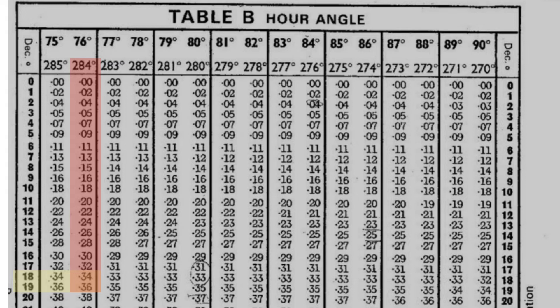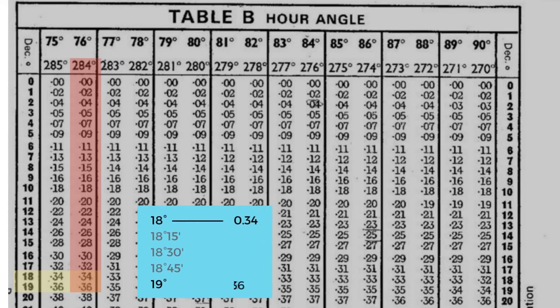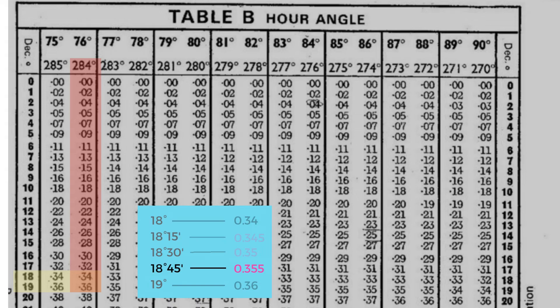Interpolate where our declination is, and that is where you find B. Since our declination of 18° 47.3' is closer to 18° 45', we can round up our B to be 0.355.